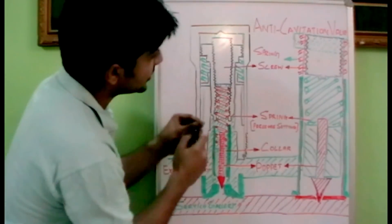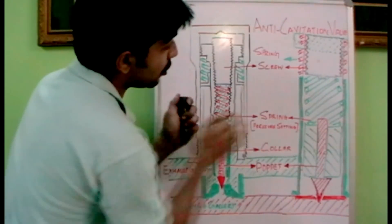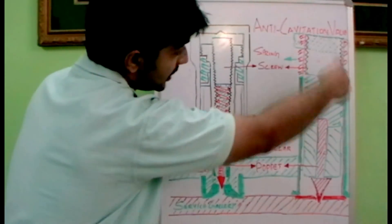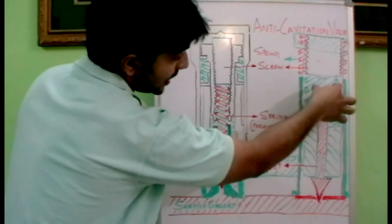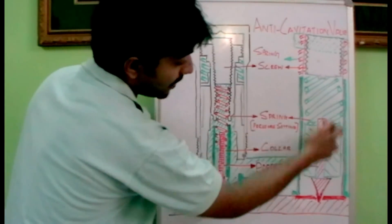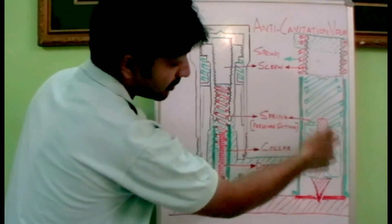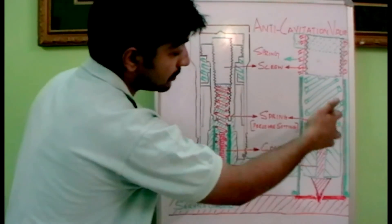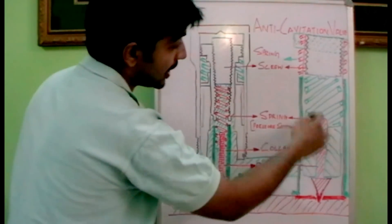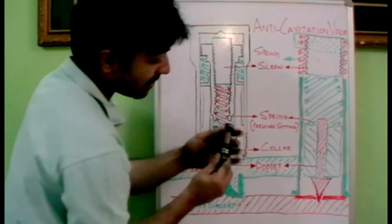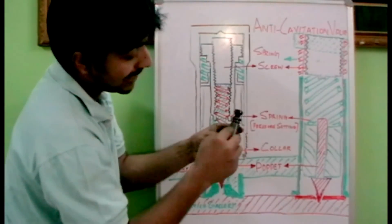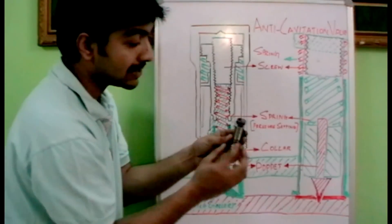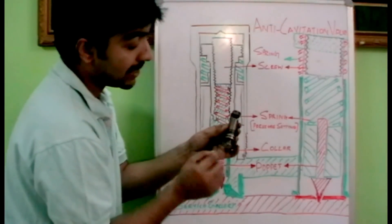This internal portion is exactly drawn over here — you can see here. Internally we have the relief valve functioning unit, and externally we have a body here, a casing or a cylinder over here.